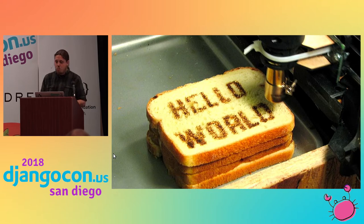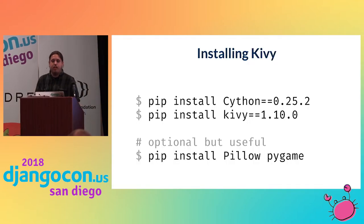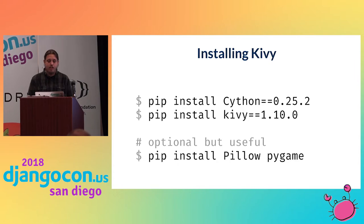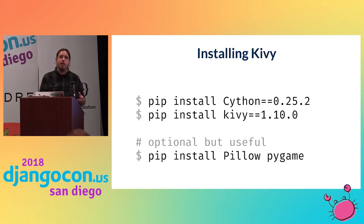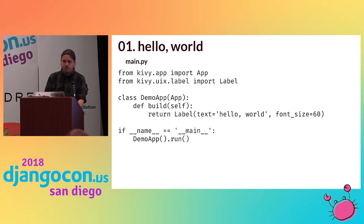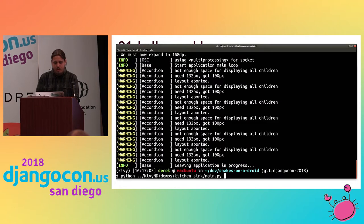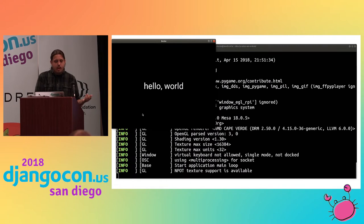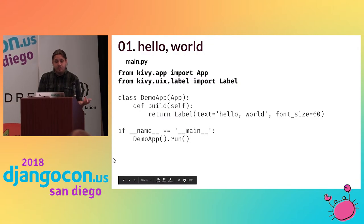Now let's look at the code. The first thing we need to do is install Cython and Kivy — specific versions of Kivy work with specific versions of Cython, so check the documentation. There are other useful optional dependencies like Pygame; on the desktop, Kivy uses Pygame to draw the window and write to that canvas. Here's our first Hello World — seven lines of Python that display hello world.